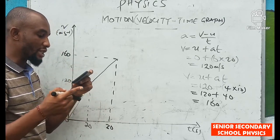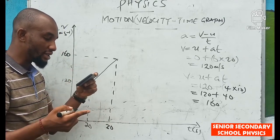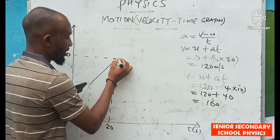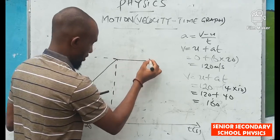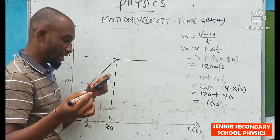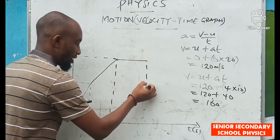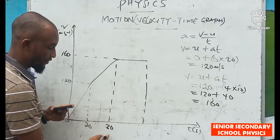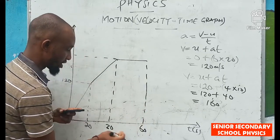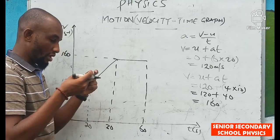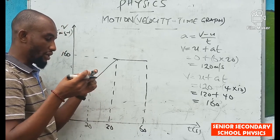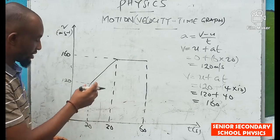The body then maintains the speed of 160 m/s for the next 30 seconds — this appears as a horizontal line on the graph. That continues until time 30 + 30 = 60 seconds. We now have the complete velocity-time graph of the motion.